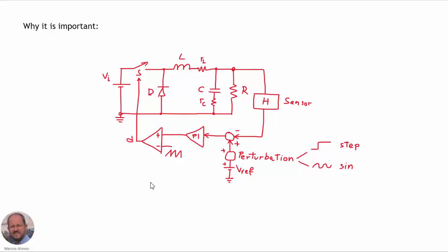The closed-loop response refers to how the converter is going to behave when we inject a perturbation into the reference voltage that we are applying to our converter in closed-loop. This perturbation can be a step transient or can be a sinusoidal perturbation.